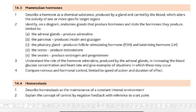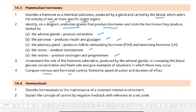14.3 is about mammalian hormones. Describe a hormone as a chemical substance produced by a gland and carried by the blood which alters the activity of one or more specific target organs. Then identify and diagram endocrine glands that produce hormones: adrenal produces adrenaline, pancreas produces insulin and glucagon, pituitary produces follicle stimulating and luteinizing hormone, testes produce testosterone, ovaries produce estrogen and progesterone.